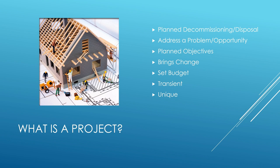First of all, we have planned decommissioning or disposal of something. We're addressing a problem or an opportunity — looking at what we could do differently or how we can fix things. We have planned objectives, so we decide what we want to achieve and plan how to achieve that. Every project brings change; if your project isn't changing anything, you're just doing administrative paperwork.